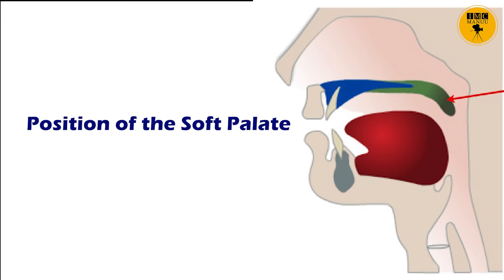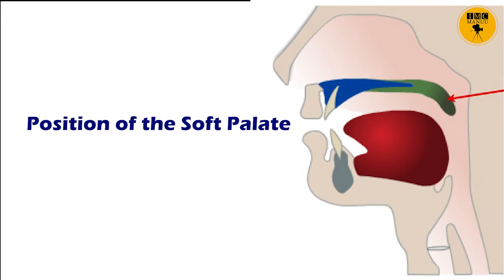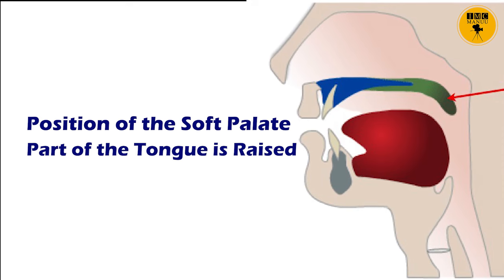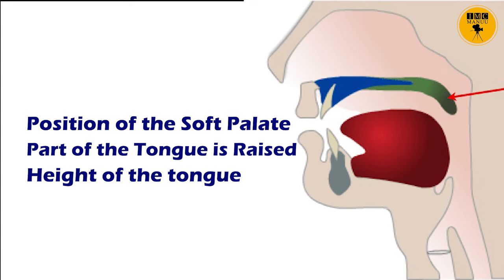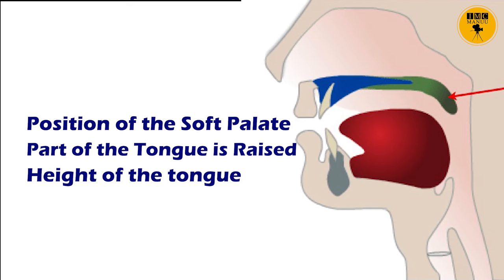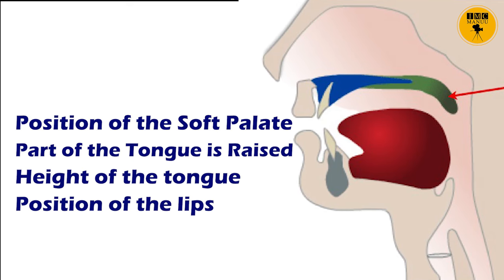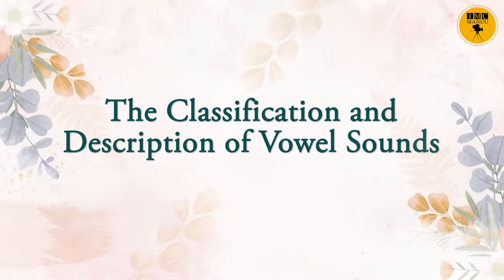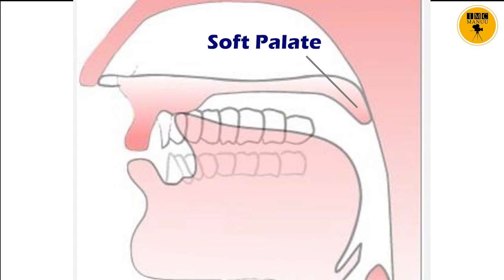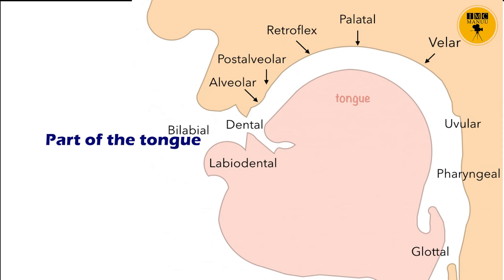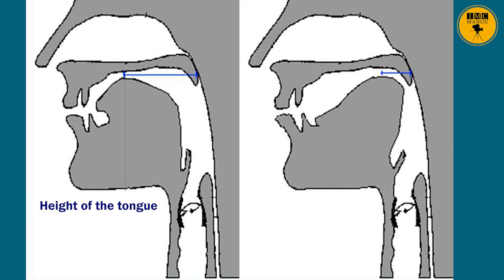To classify verbal sounds, there are certain things that we need to take into perspective. We need to look at the position of the soft palate, what part of the tongue is raised, the height of the tongue, and the position of the lips. Under Classification of Verbal Sounds, you see the position of soft palate, then the part of the tongue raised, followed by the height of the tongue, and then the position of the lips.